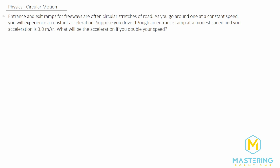As we go around one at a constant speed, we'll have a constant acceleration. Circular motion is different than linear motion because as we're going around the circle, our velocity is constantly changing direction even though the speed is the same, so we'll still have a constant acceleration because we're changing direction constantly.